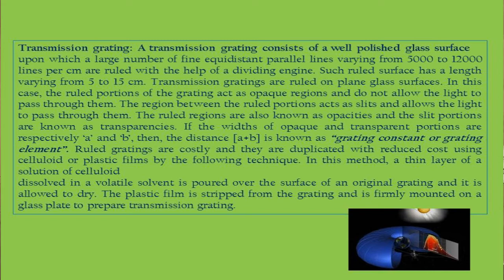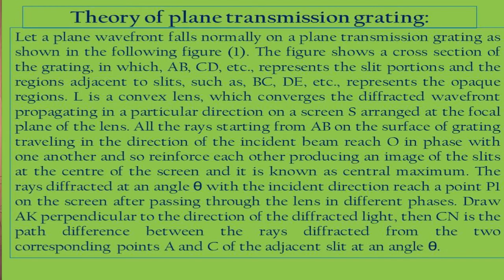The rulings act as the opaque zones and the separation between them is the transparent part, giving five thousand or ten thousand slits per inch. A replica is then made using cellulose acetate — a polymer thin film spread over the glass plate. The cellulose deposits more in the grooved parts; when dried and peeled off, it gives a replica. The diffraction gratings sold in the market are replicas of the original plane transmission grating.